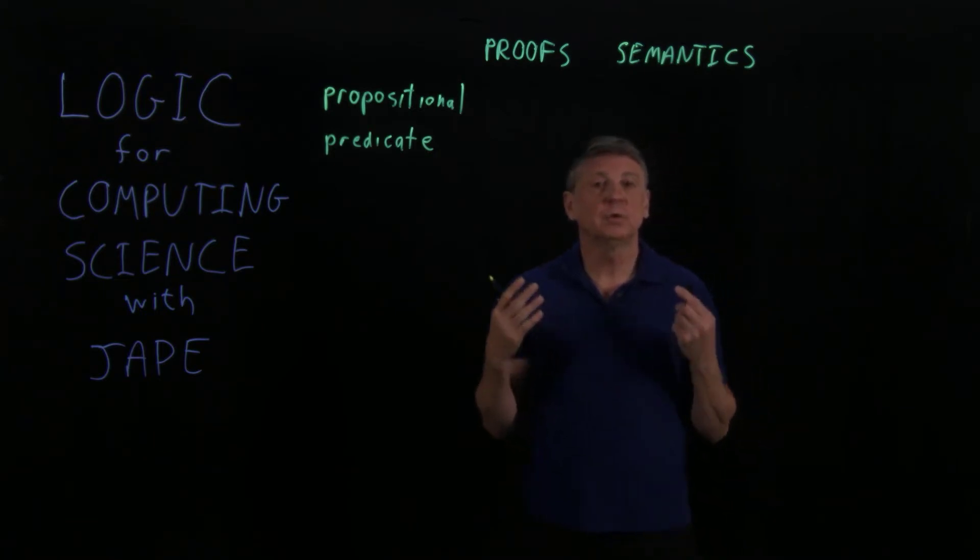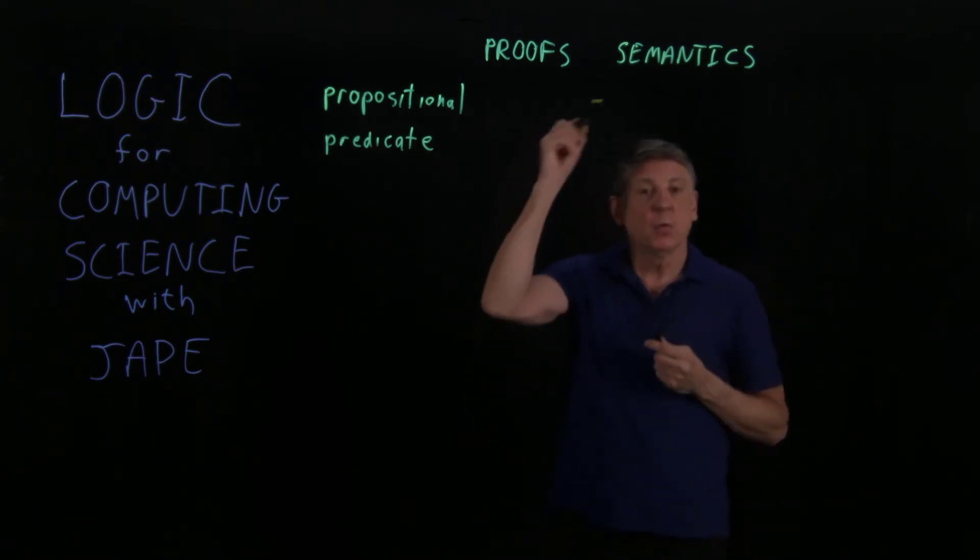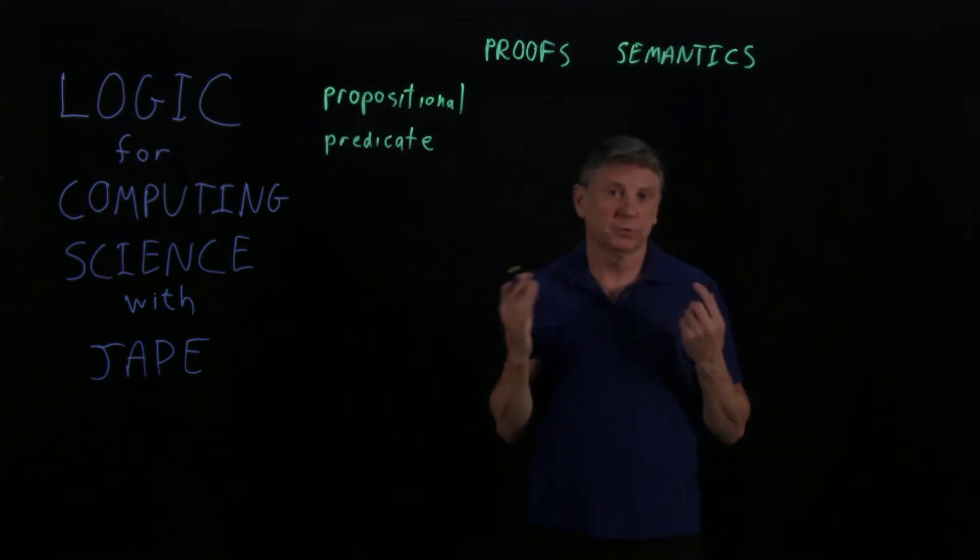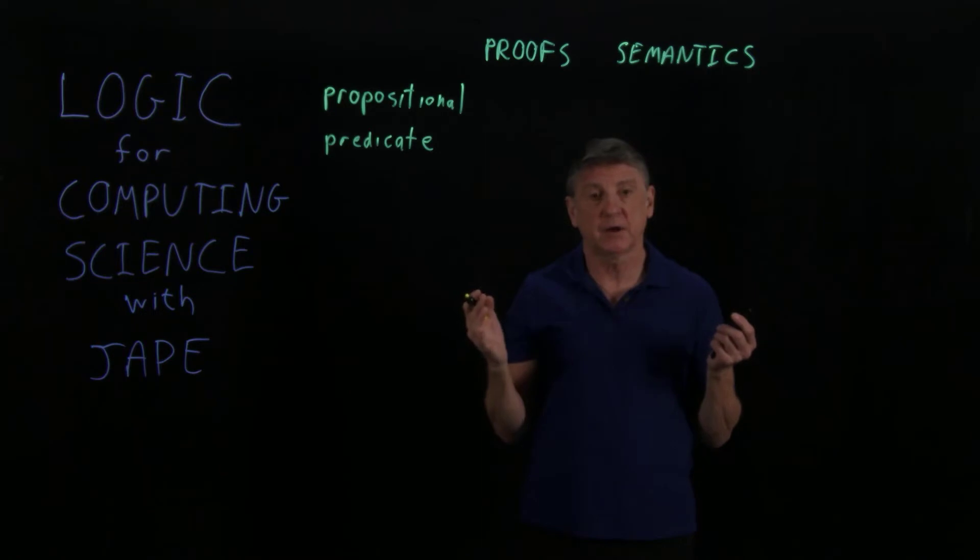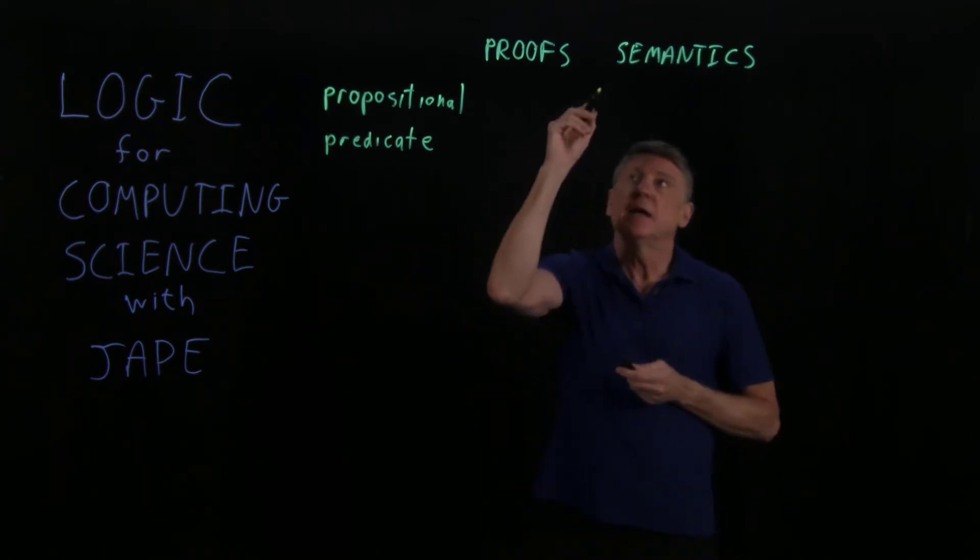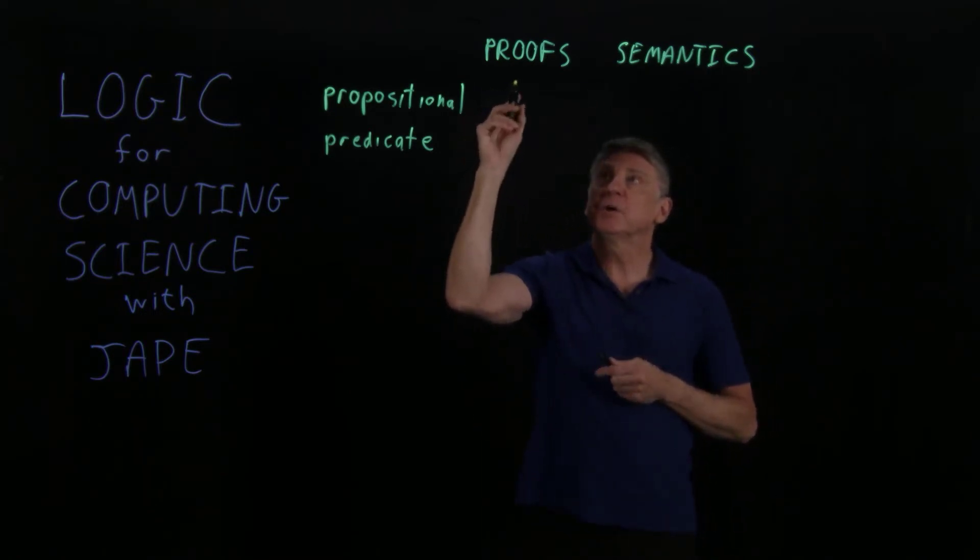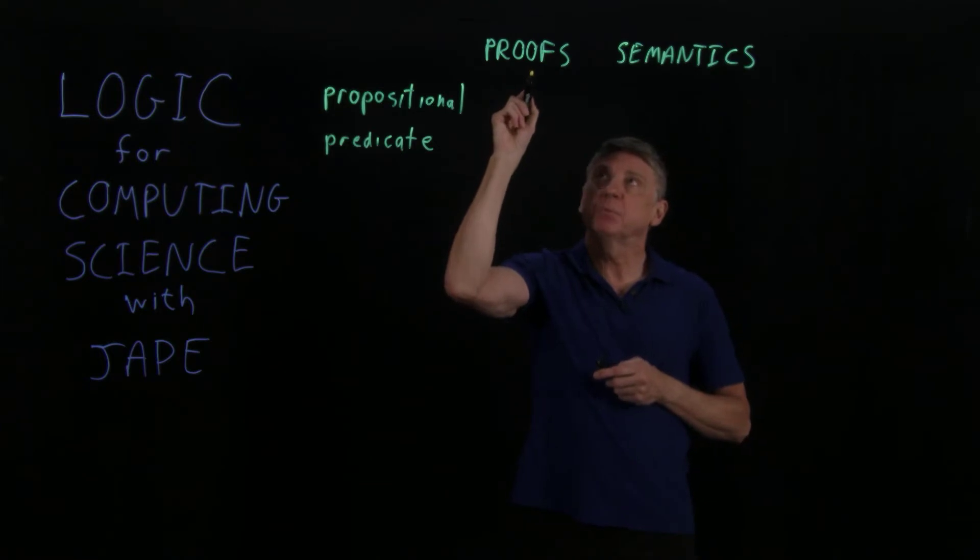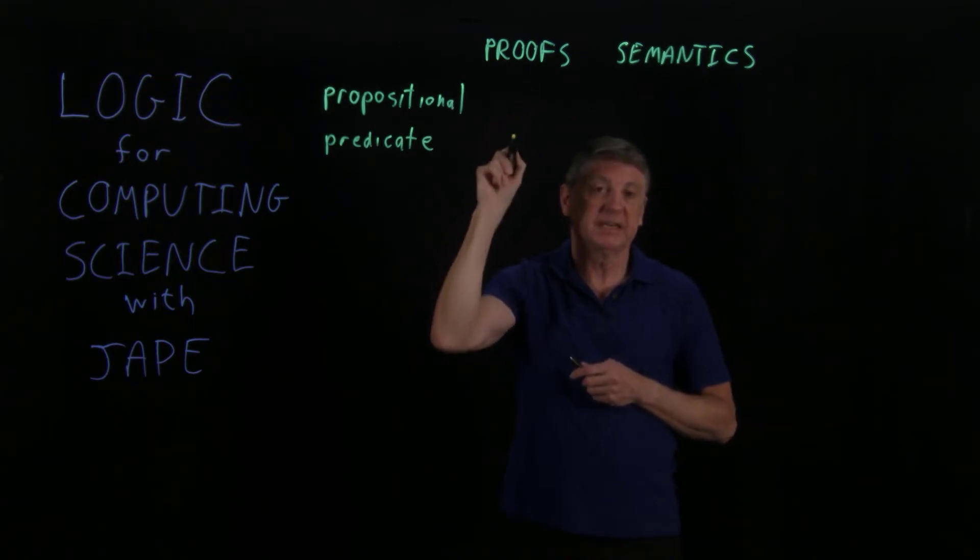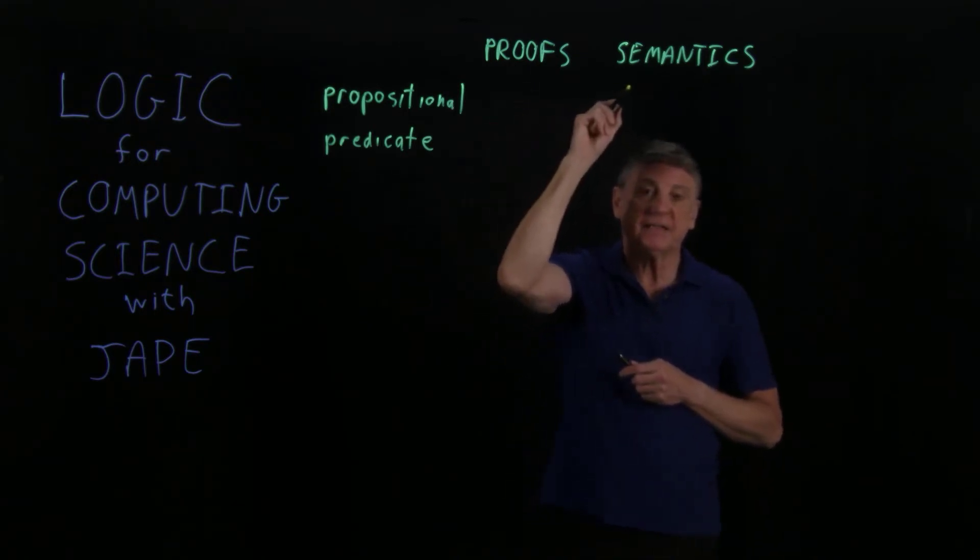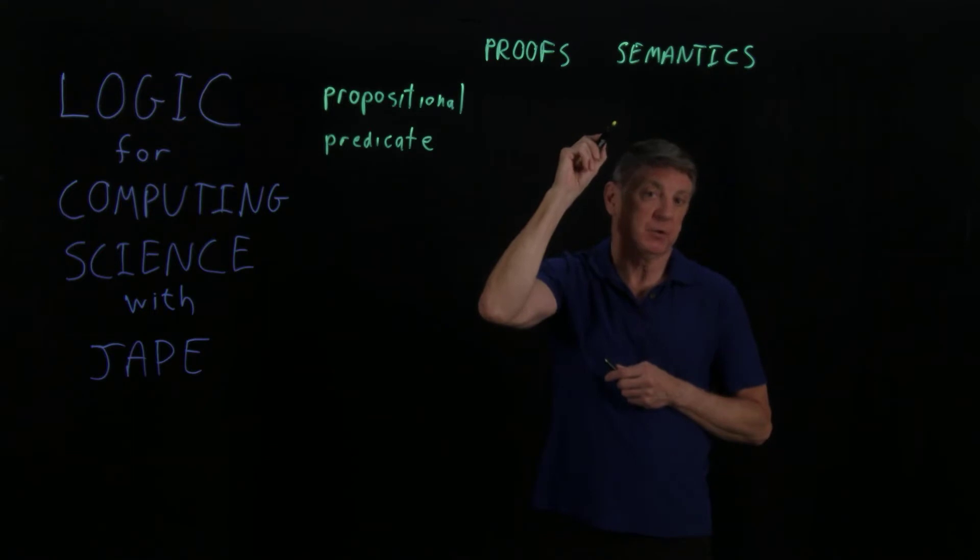And we'll go through the semantics. When we do this, we won't go through the proofs because the proofs are quite advanced. They're often left for graduate courses. And in those proofs, we can show that if there's a proof for a set of premises leading to a conclusion, then semantically, there's something that corresponds.